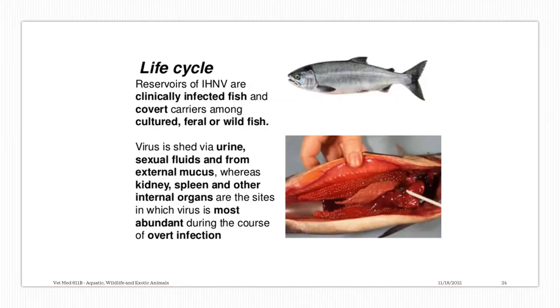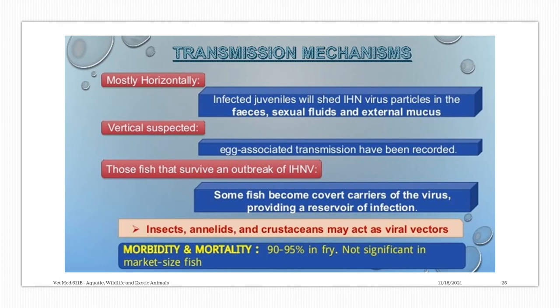For the reservoir of IHNV, these include clinically infected fish and covert or asymptomatic carriers among cultured, feral, or wild fish. The virus is shed by the urine, sexual fluid, and from external mucus, whereas kidney, spleen, and other internal organs are the sites where the virus is most abundant during overt infection. For transmission, most cases are horizontal, including infected juveniles shedding the virus particles in the feces, sexual fluids, and external mucus.